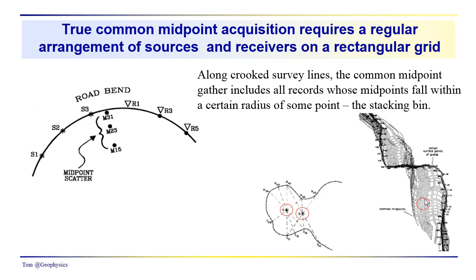These common midpoint gathers, especially if you have irregular acquisition geometry, are going to have some scatter. Hopefully it's not too much so that when you go through the NMO correction and stacking process, you get an accurate representation of the reflectivity and reflective properties of the surface in this region, the stacking bin.